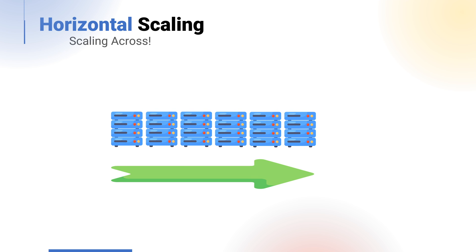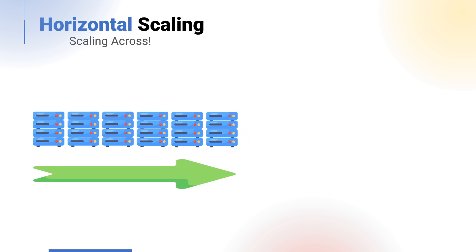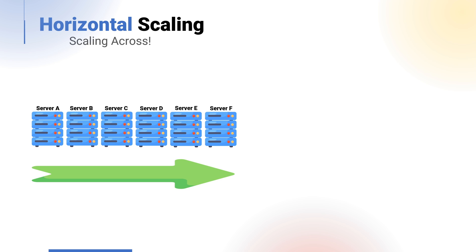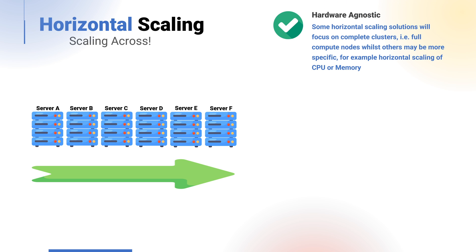Horizontal scaling is the addition or removal of resources in relation to the existing resources. As an example, we may have an application running across a set of servers comprising standard compute infrastructure — CPU, memory, and storage. We could horizontally scale the application to utilize more compute resources, increasing the overall CPU, memory, and storage. Some solutions may focus on specific resources, while others may focus on the scaling of complete clusters, i.e., full compute nodes.